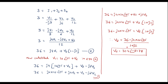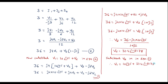Now substitute V2 into Equation 1. Therefore, V1 equals 10∠45° plus 31.4∠-81.78°, which gives V1 equals 25.78∠-70.48°. Thus, we have found V1 and V2 using nodal analysis. Thank you.